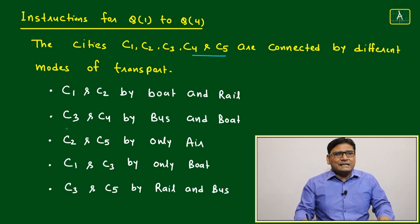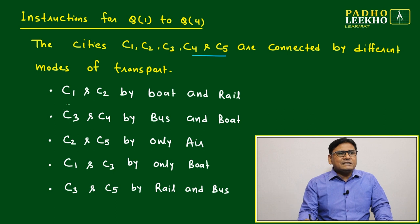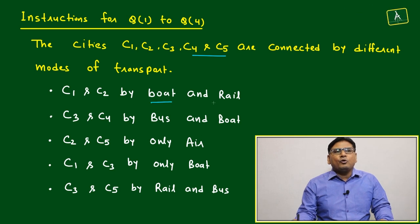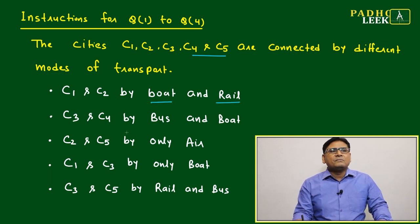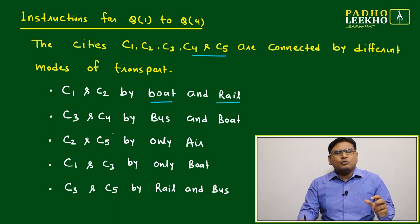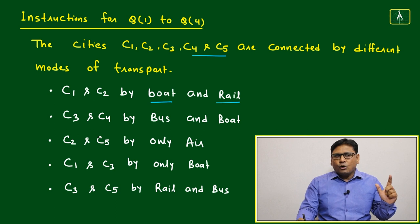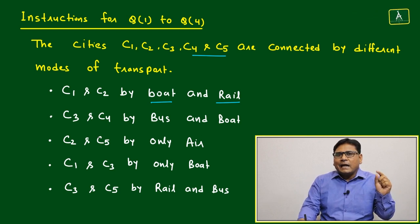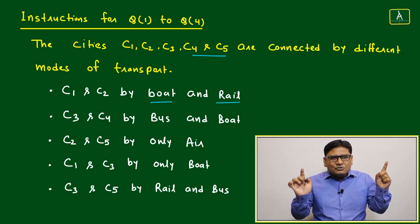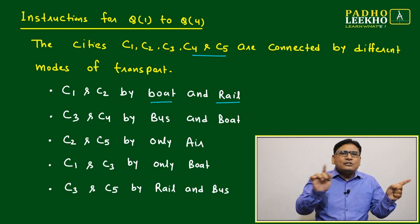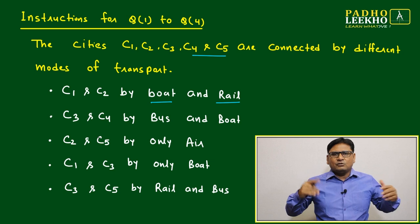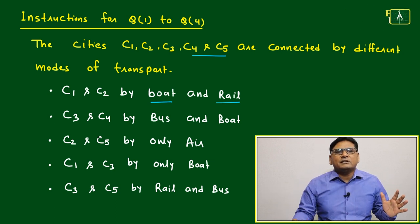The caselet gives further information about how different cities are connected by different modes of transport. C1 and C2 are connected by boat and rail, and the remaining two modes (bus and air) do not apply between them. One important point: type of routes is not the issue here. C1 and C2 being connected by boat and rail means you can go from C1 to C2 or C2 to C1, but you only have two options — boat or rail.